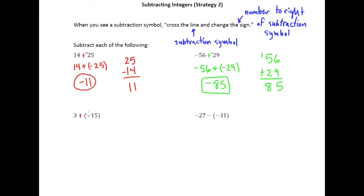I think the nice visual way of doing that is also turning that negative into a plus. So it's cross the line, change the sign, change the sign. And so 3 plus positive 15, and I don't really need to put the positive symbol in front. We can just leave it as 15. 3 plus 15 of course is 18.